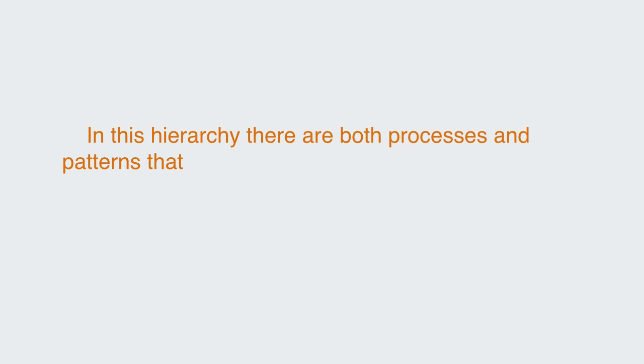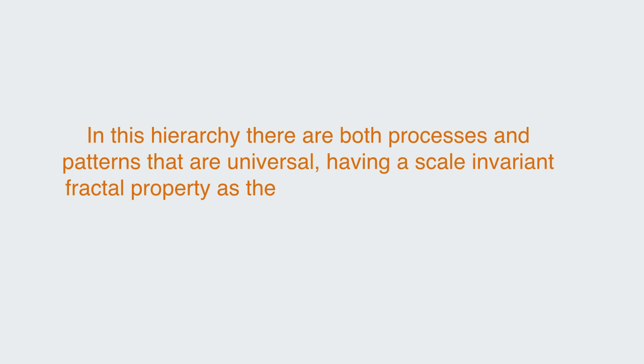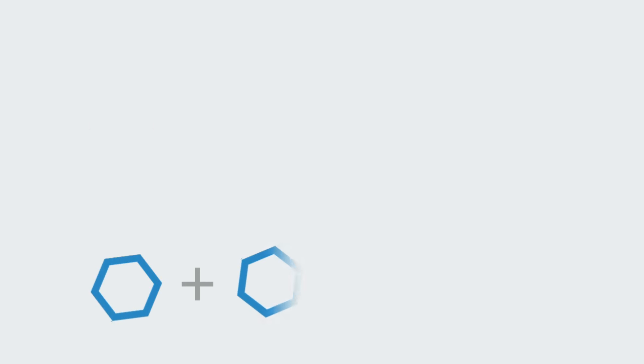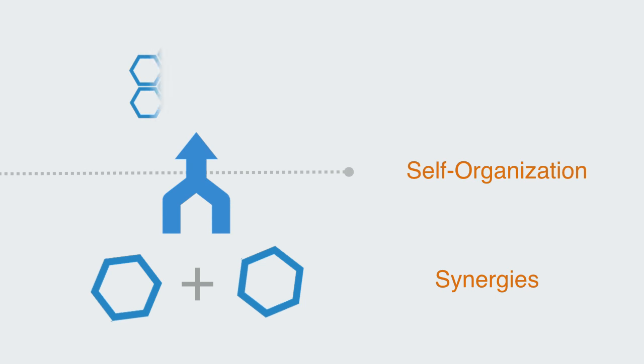In this hierarchy there are both processes and patterns that are universal, having a scale-invariant fractal property as they reoccur on all levels, but also unique processes emerge on the different levels. But this idea of synergies and self-organization leading to emergence and the formation of new levels in a hierarchical fashion is a central model to understanding the complex multi-dimensional characteristic of ecosystems.